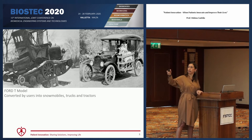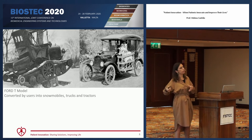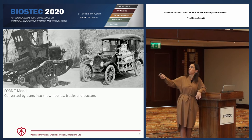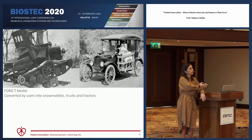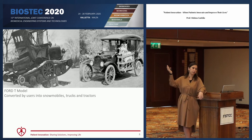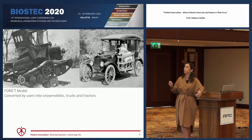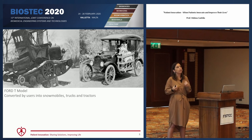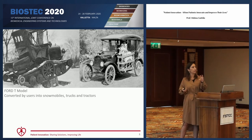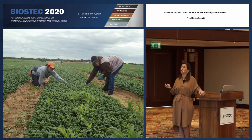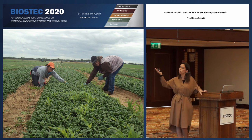The first snowmobile you can see here on the left was modified by someone who is a farmer. They had needs that the car produced by Mr. Ford didn't address. So user innovation is something like that — when users and citizens start using products produced by manufacturers, they feel they need to do something because the product is not totally adapted to their needs.